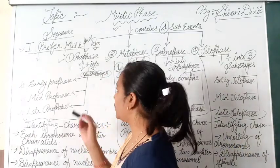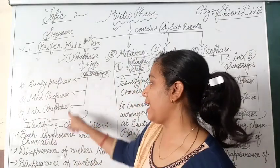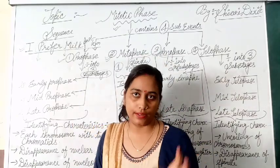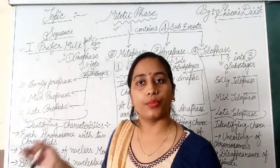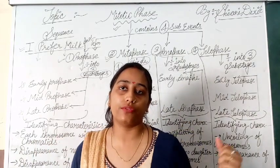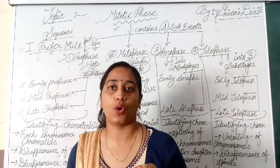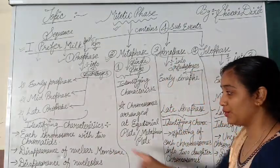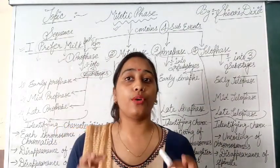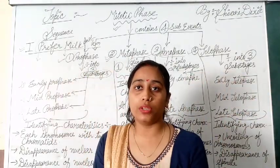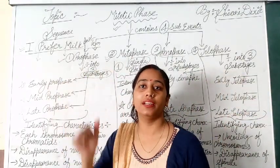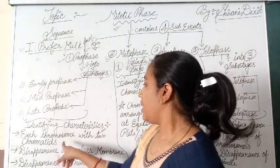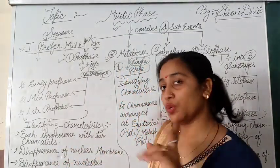I hope the sequence is clear. Next, we will discuss the identifying characteristics of each phase. In board exams, it is very frequently asked: what are the identifying characteristics of prophase, metaphase, anaphase, and telophase? Before going to the diagram, I am making an outline of the mitotic division. You have to remember the identifying characteristics. In prophase, each chromosome has two chromatids.